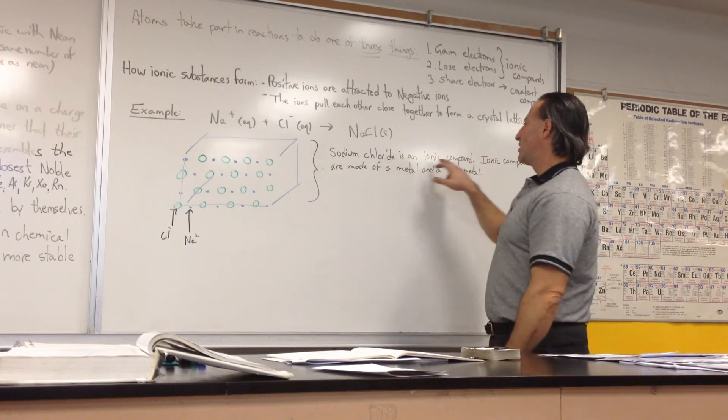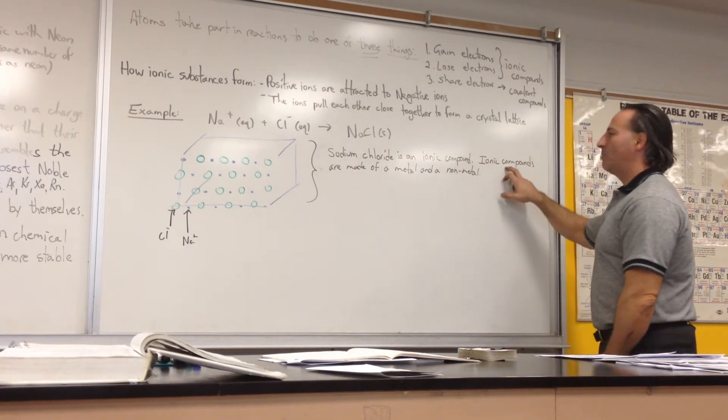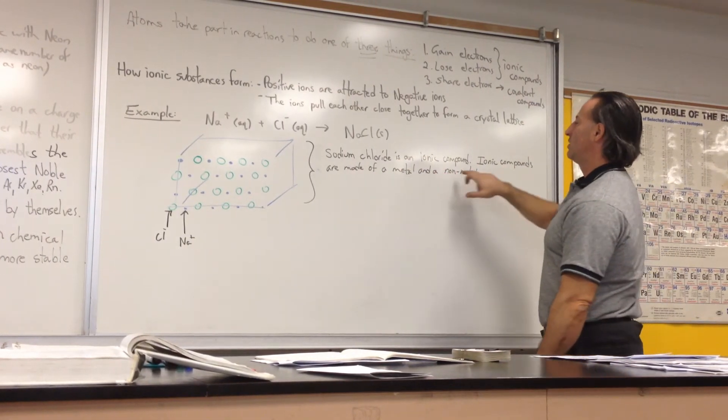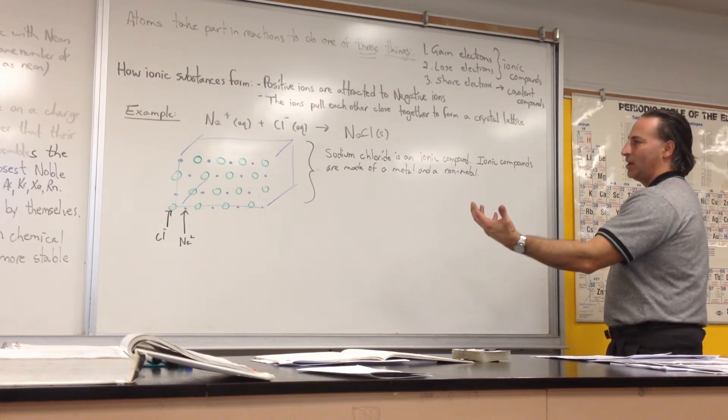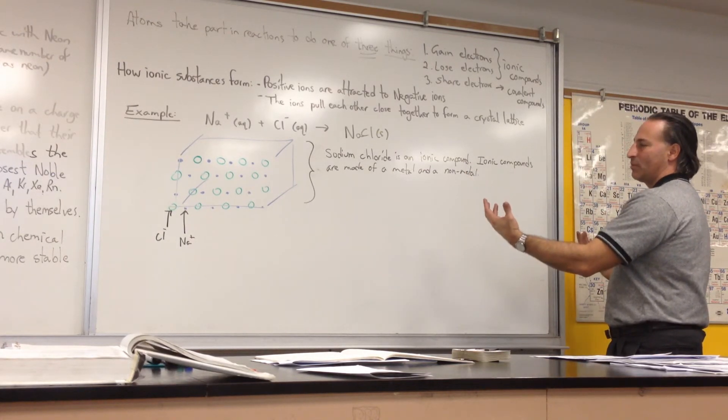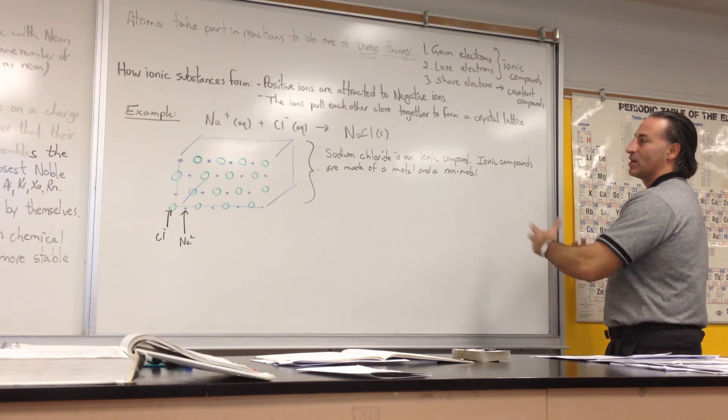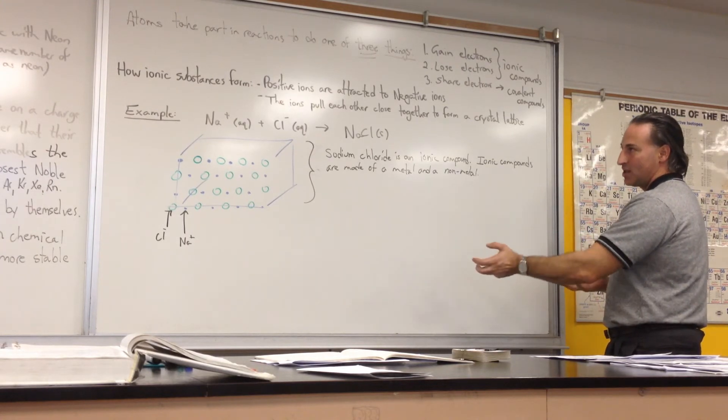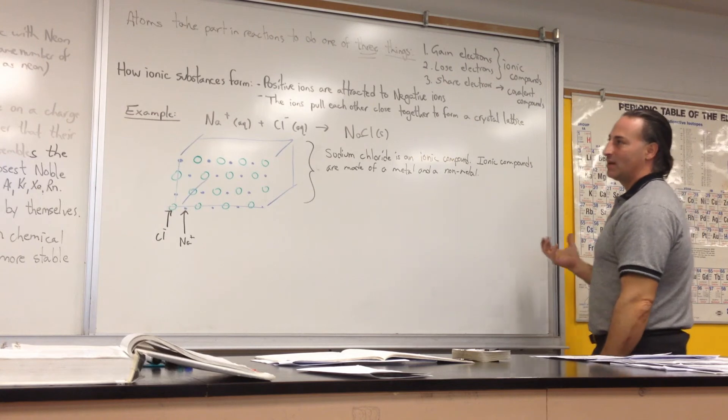So sodium chloride is an ionic compound. Ionic compounds are made of a metal and a non-metal. So there are things from the left side of the periodic table that like to combine with elements from the right side of the periodic table because metals like to give up electrons, and non-metals like to take electrons.